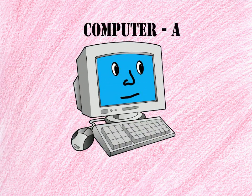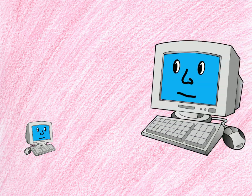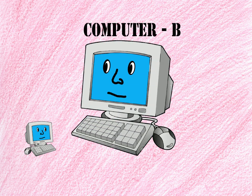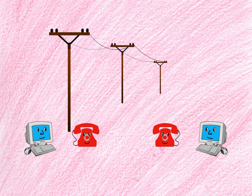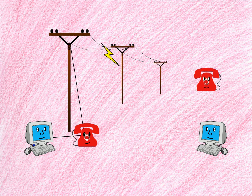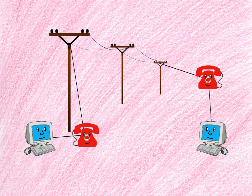Let us consider a computer A and another computer named computer B. If computer A or B wants to send messages to one another, it requires a medium, which is provided by our telephone cables. For a message from computer A to reach computer B, it goes through a series of connections: from computer A to telephone A, then to the telephone cables, which will be received by telephone B, and then to computer B.